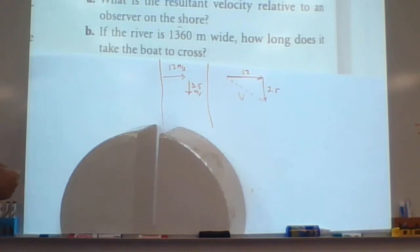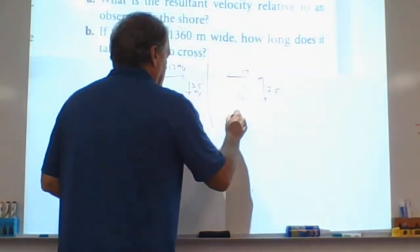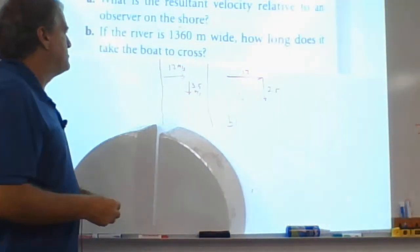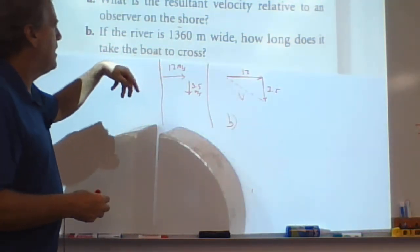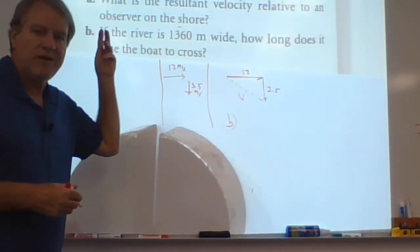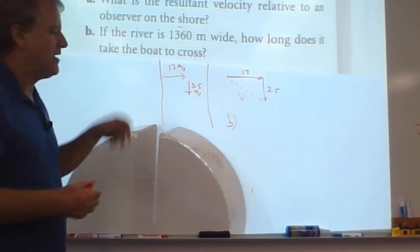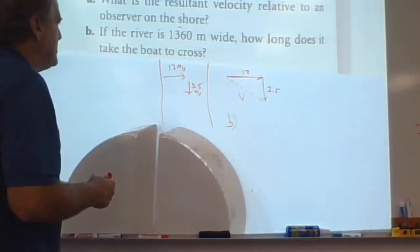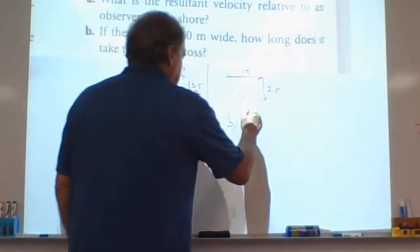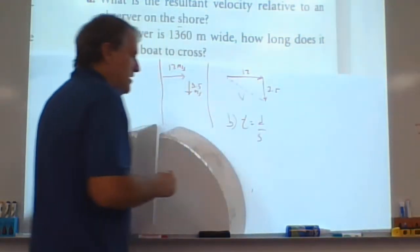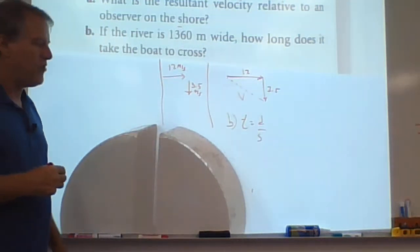B is, if the river is 1360 meters wide, how long does it take to get the boat across? Well, let's see what we got here. We got a resultant speed. The river is this wide. And we're looking for time. We got speed, distance, and time. What does that sound like? That sure sounds like speed equals distance over time. Well, we know that time is equal to distance over speed, right? Based on that formula.